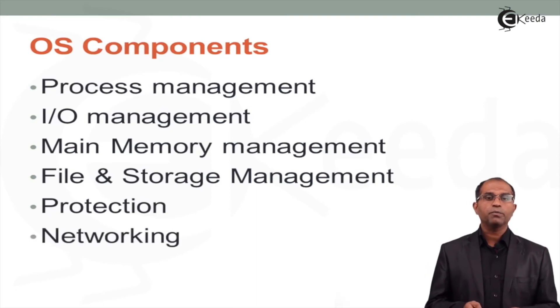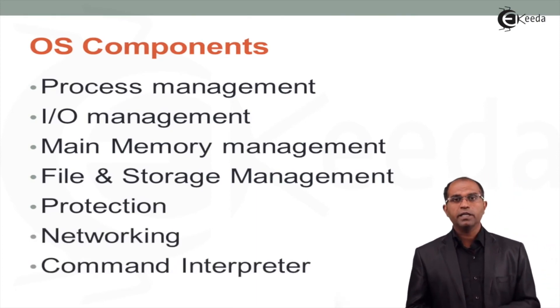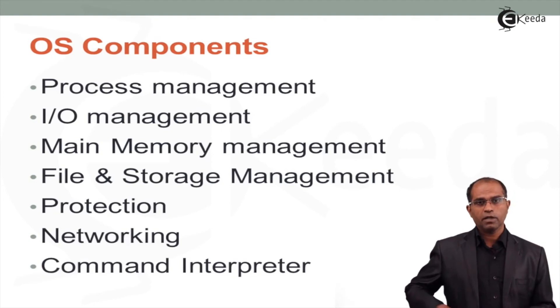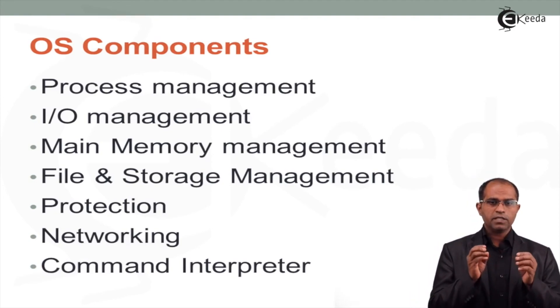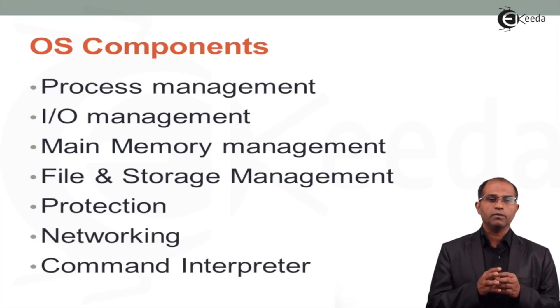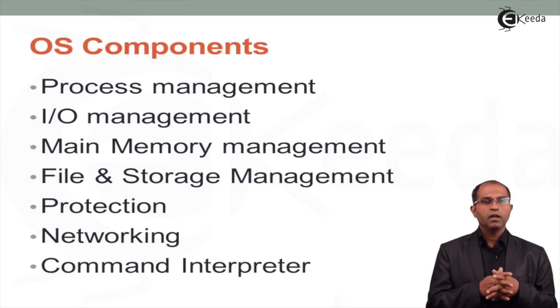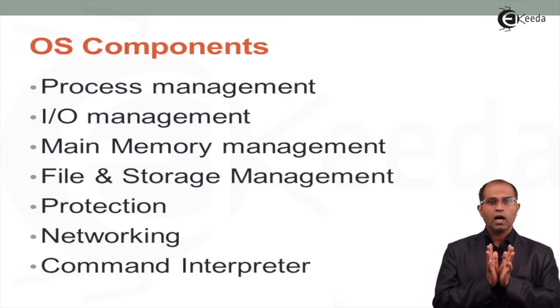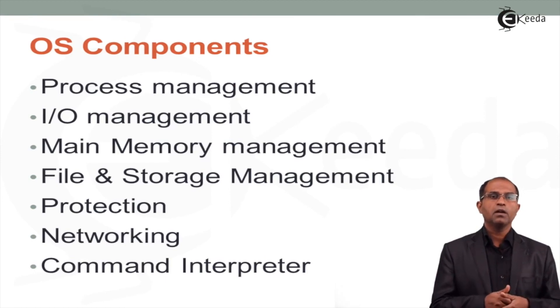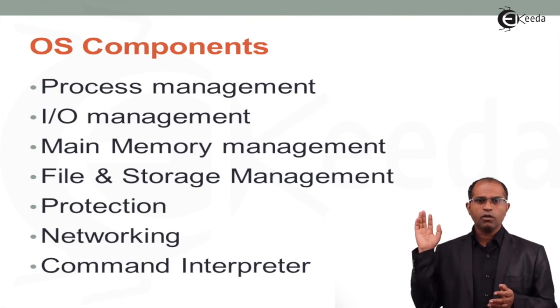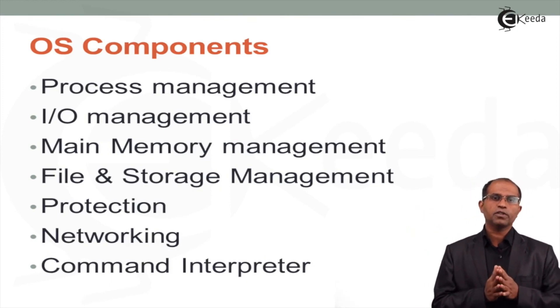Then we have something called protection, networking, and then we have command interpreter. So basically, the seven components which are there in this particular operating system are process management, I/O management, main memory management, file and storage management, protection, networking, and command interpreter.